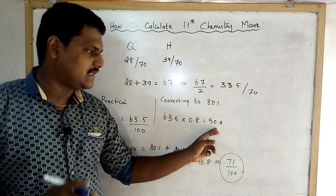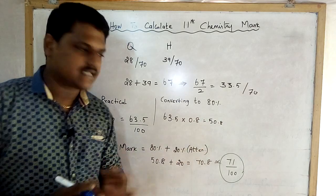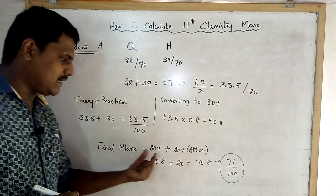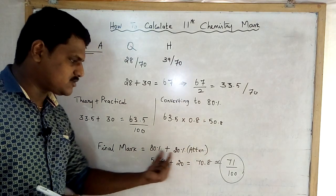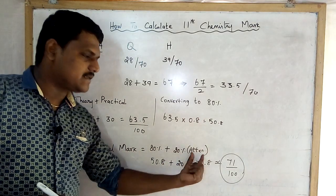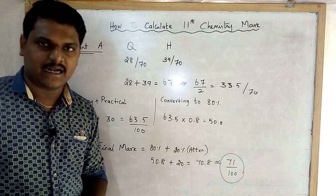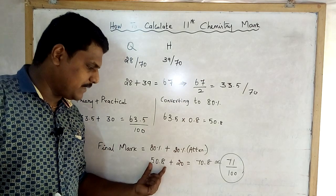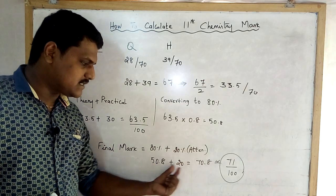Quarterly and half-yearly practicals give an 80 percentage mark. Then the final mark is 80 percent. We are adding the 20 percentage mark: 50.8 plus 20.